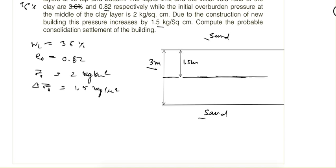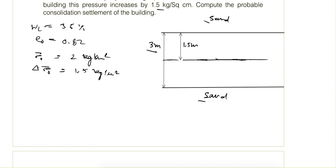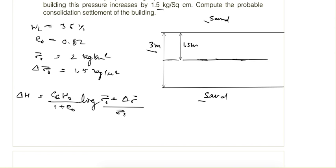In terms of effective stress, the settlement formula is given as: delta H = CC × H0 / (1 + E0) × log((sigma naught + delta sigma) / sigma naught). Here we know E0, H0 is the total thickness of 3 meters, and sigma naught and delta sigma. We just don't know the compression index, for which we are given the liquid limit.